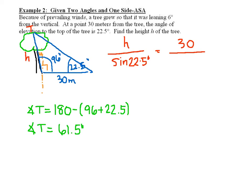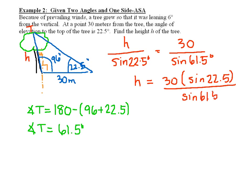Now we can use our law of sines. We can say 30 divided by the sine of 61.5 degrees, and then we solve for H. So H ends up equaling 30 times the sine of 22.5, all over the sine of 61.5. Once we plug all these values into our calculator, you get a height of 13.1 meters.